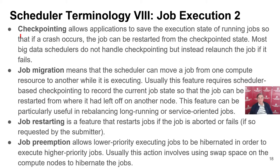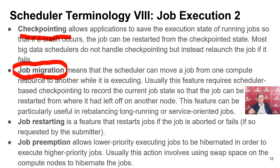Checkpointing is somewhat controversial — Hadoop and Spark have built-in checkpointing and don't expect the scheduler to do it. Job migration is pretty important, especially in clouds, because clouds are built in a cloud-native fashion which allows fault tolerance. Job restarting is typically done by the user — when job 23 fails, you resubmit it — but it could also be done automatically by the scheduler. Preemption is like the Amazon scenario: lower priority jobs are terminated or stopped and put back in the queue to allow a higher priority job to run.